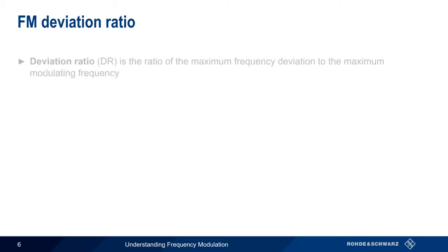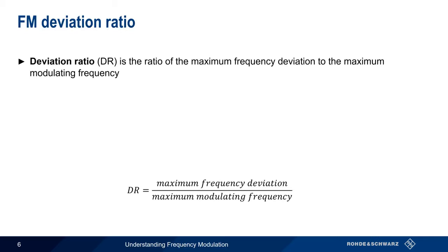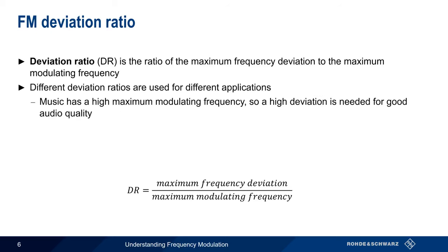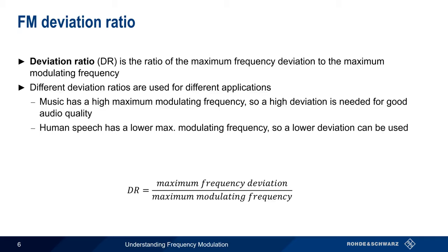Deviation ratio is the ratio of the maximum frequency deviation to the maximum modulating frequency. The deviation ratio will be different depending on the application. For example, music has a relatively high maximum modulating frequency, and this in turn requires a relatively high frequency deviation if we want good audio quality. On the other hand, normal human speech has a lower maximum modulating frequency, so we can use a lower deviation and still have intelligible signals.